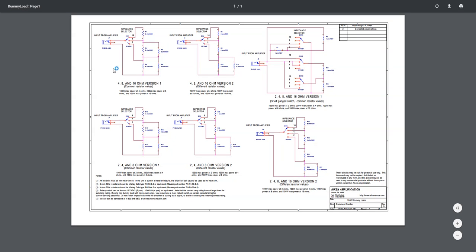If we look at this, we can see quite a few different variants of a simple resistive circuit designed for dummy load. You can have a 4, 8, and 16 ohm version of a couple variations. You can have a 2, 4, and 8 ohm for a couple variations.